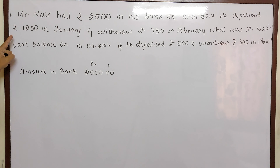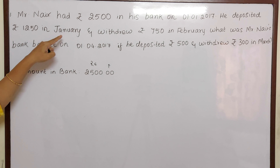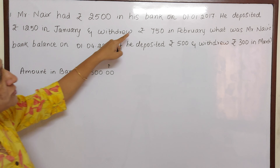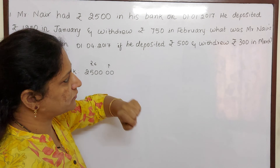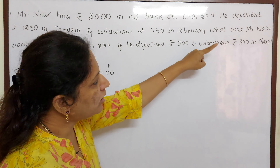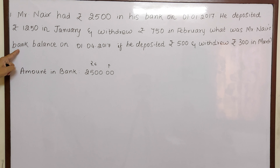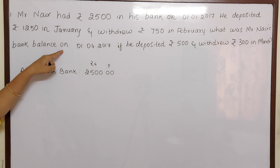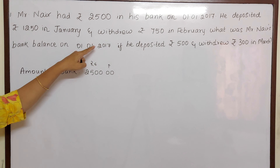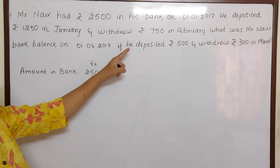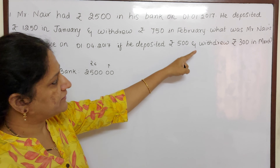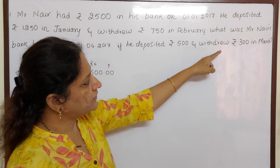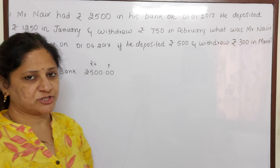He deposited Rs. 1250 in January and withdrew Rs. 750 in February. What was Mr. Nair's bank balance on 1st April 2017 if he deposited Rs. 500 and withdrew Rs. 300 in March?